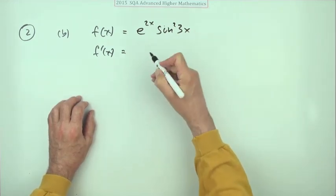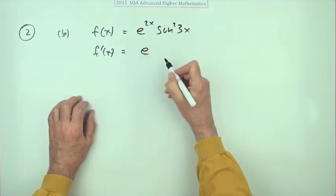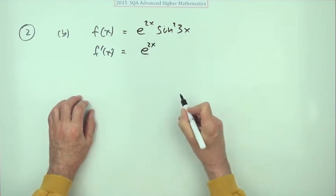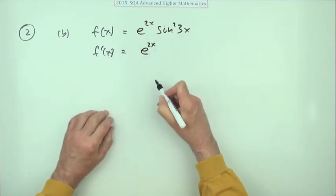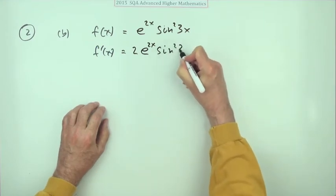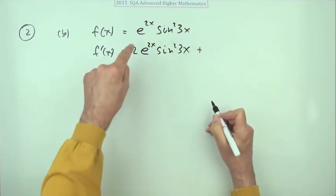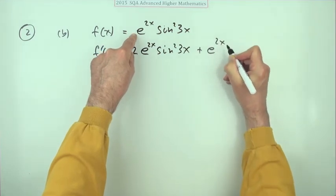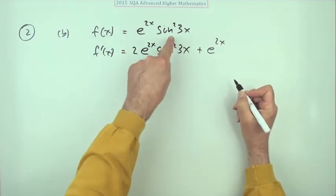So we differentiate this. The handy thing about the exponential function is it just stays as itself, but since it's operating on 2x you have to multiply by 2, and then leave the second one alone.